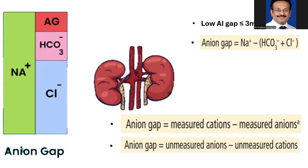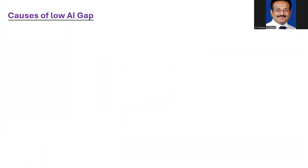The main unmeasured anion is albumin. The main unmeasured cations are calcium, magnesium, and lithium. If there is an abnormality of albumin, calcium, magnesium, or lithium, your anion gap will obviously be affected. Unless you know this, you will find it difficult to understand the causes of low anion gap.